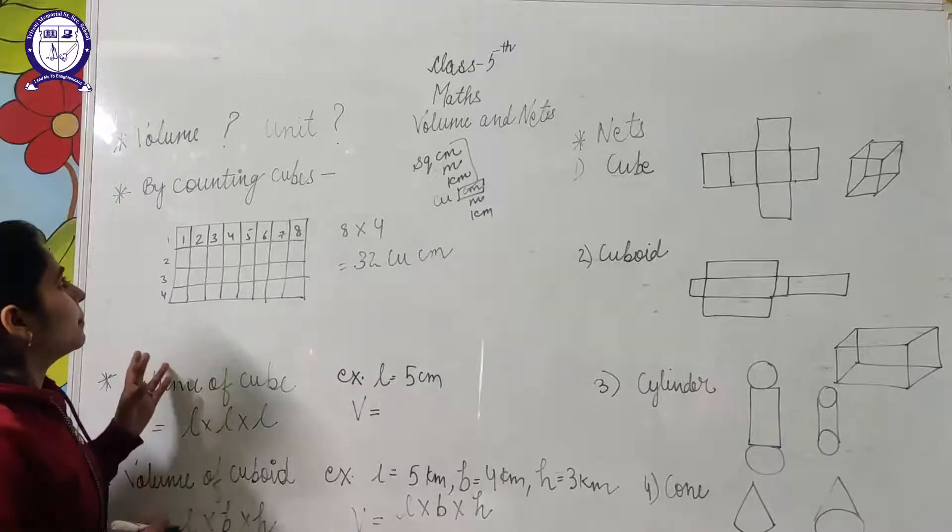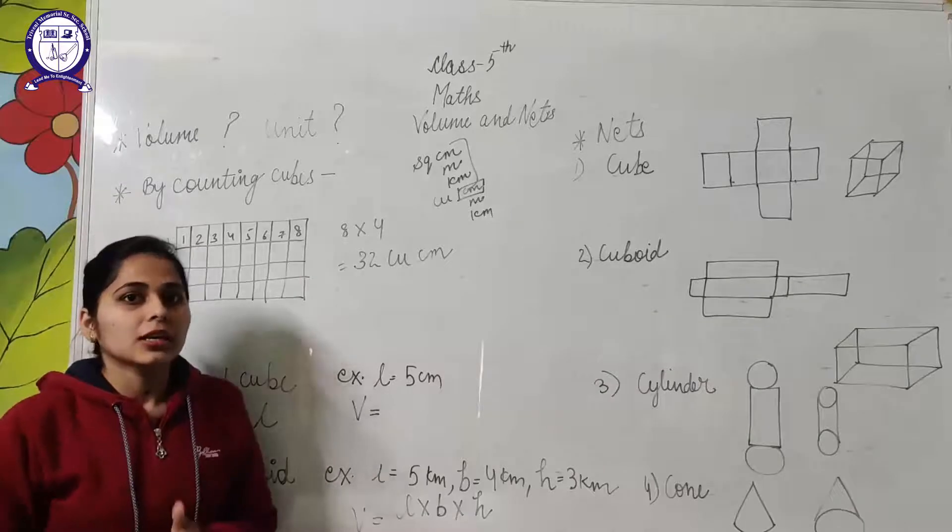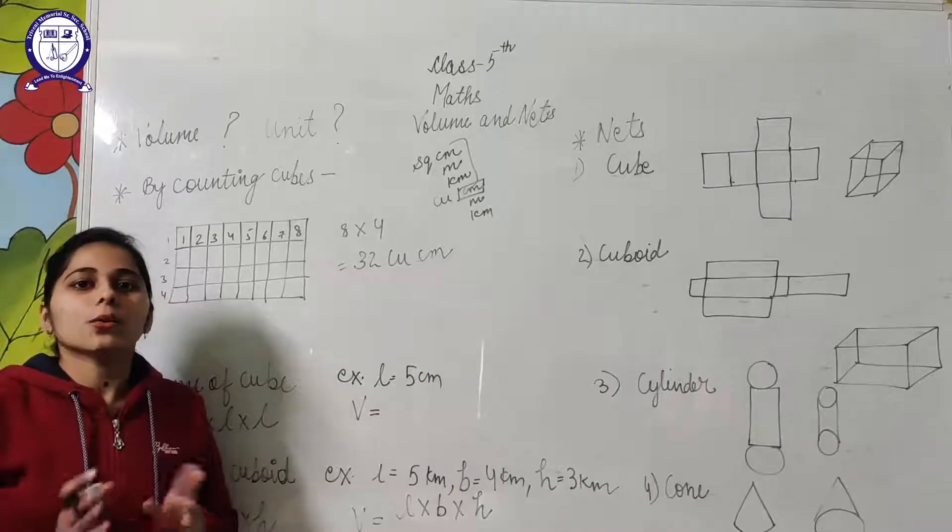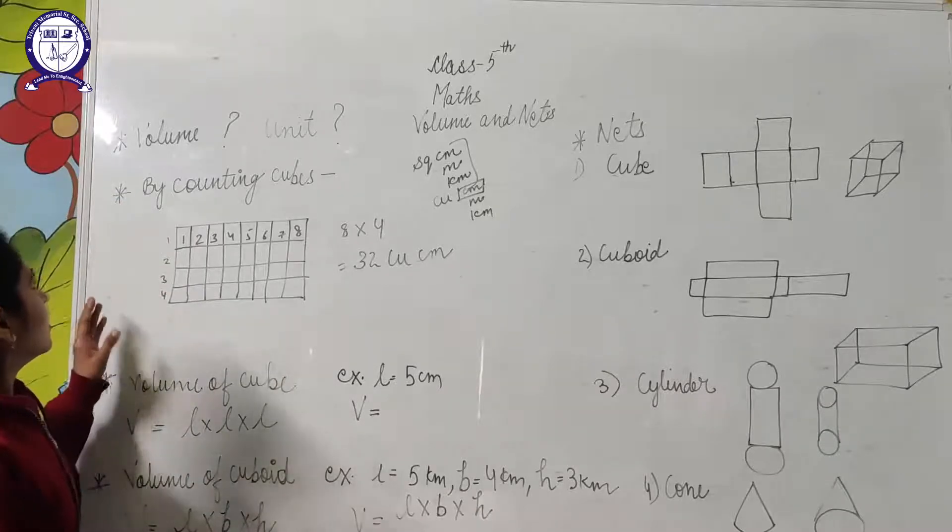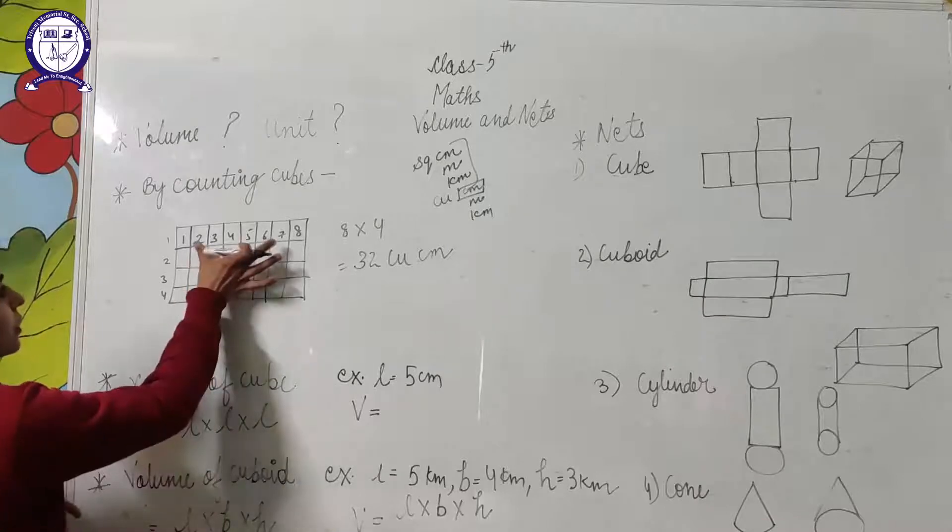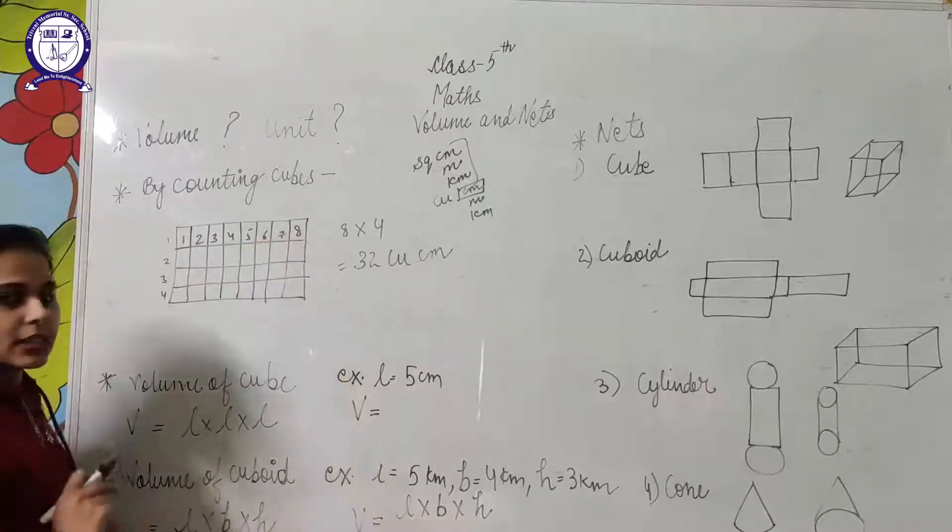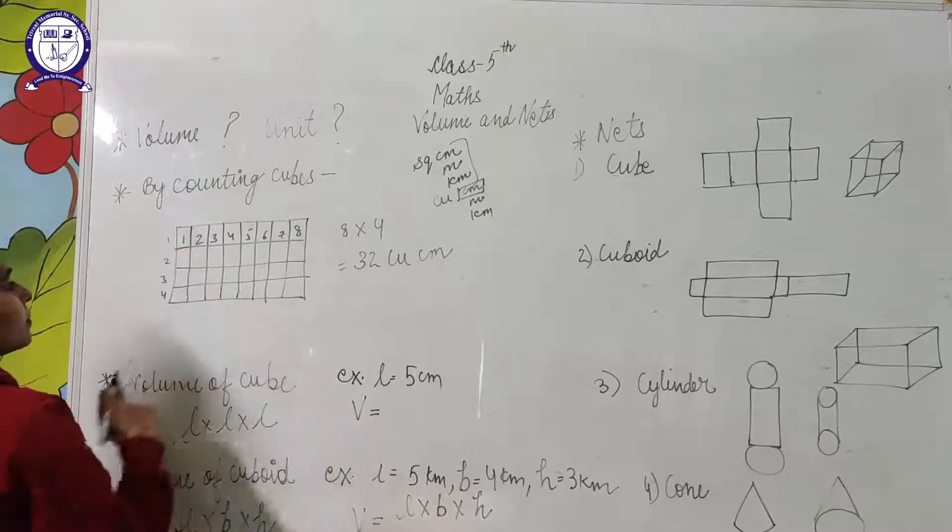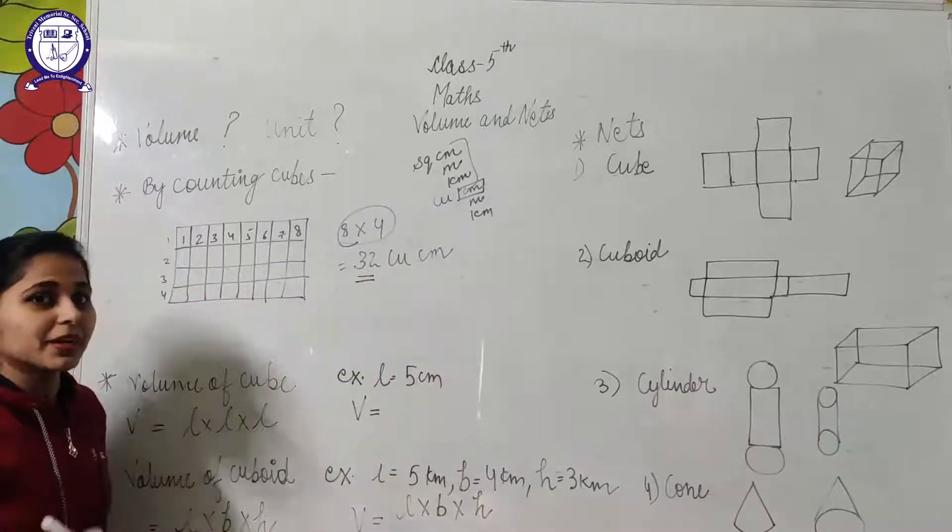Now we can also find out the volume by counting cubes. Suppose you buy a packet of milk with 500 milliliters, 1 liter, or 2 liters written on it. That is the specific volume of that packet. By counting cubes, you can count in rows and then in columns. If there are 8 cubes in rows and 4 cubes in columns, we can multiply 8 by 4, that is 32 cubic centimeters.